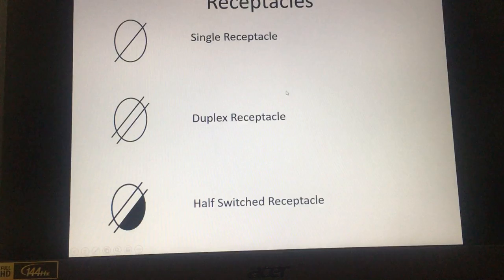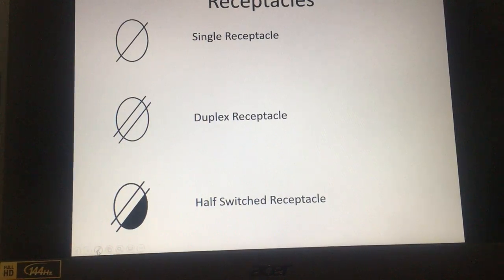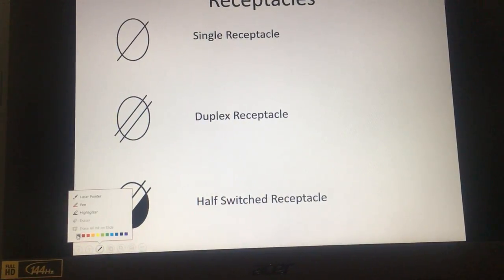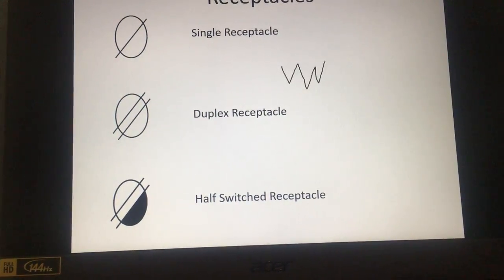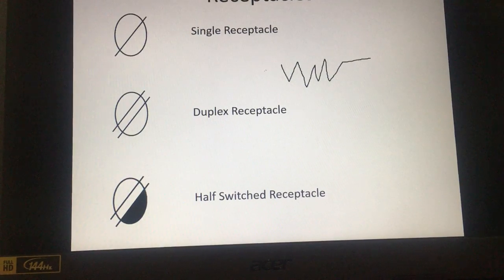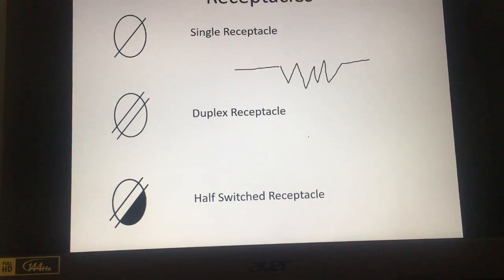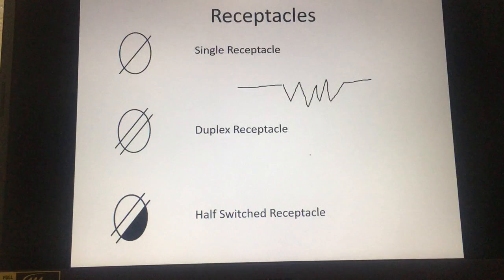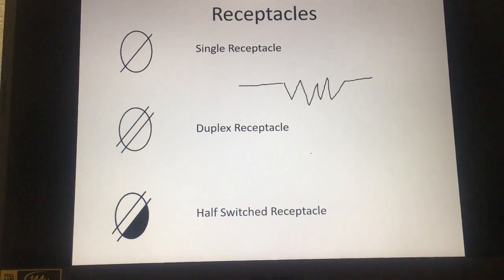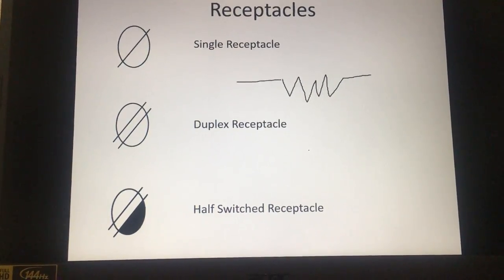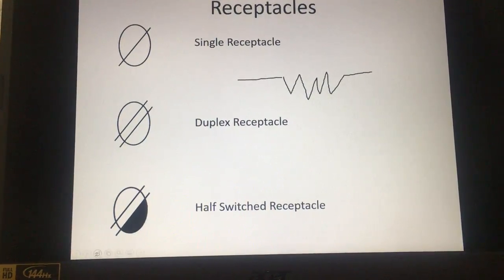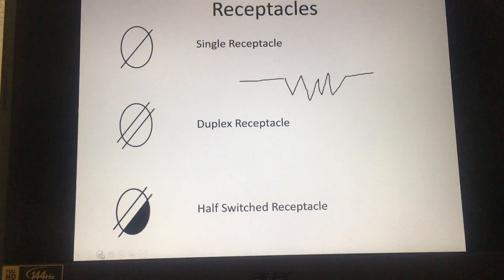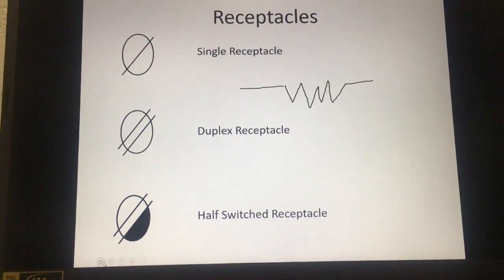You're not going to see those in that one. The one thing you do see though is this symbol. That's a resistor, that's the symbol of a resistor, and without having resistance in a circuit you have a short circuit. So you have to have some type of resistance in the circuit.